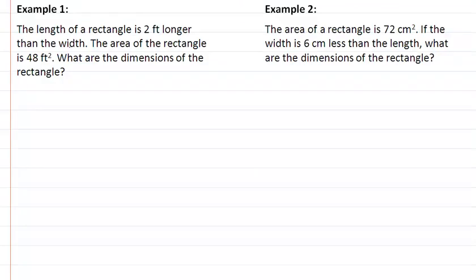In our first example, we are given that the length of a rectangle is two feet longer than the width. So let's draw a rectangle out here. We don't know what the width is, so let's call that x. That means the length has to be x plus 2.